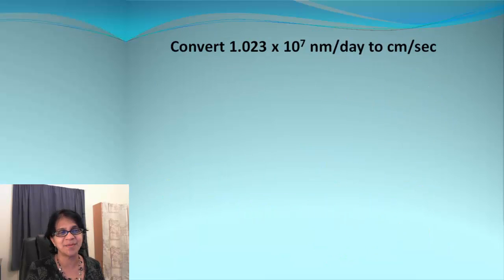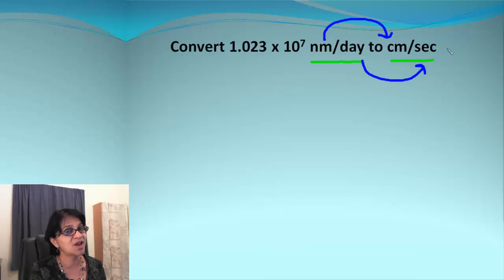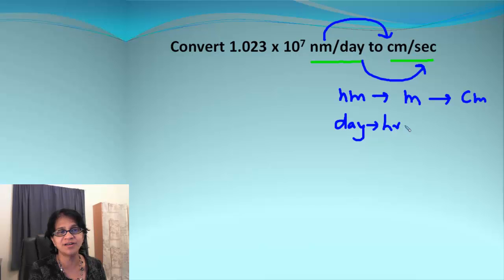Alright, here is another example. We are converting nanometers per day to centimeters per second. Now there are two conversions. We are going to go from nanometer to centimeters and from day to seconds. And these are not one step conversions. If you look at nanometer to centimeter, they both are prefix to prefix. So we need to go through our hub which is meters and from there we go to centimeter. And then if it is day, from day we go to hours, from hours to minutes and minutes to seconds. So we got a couple of steps there.